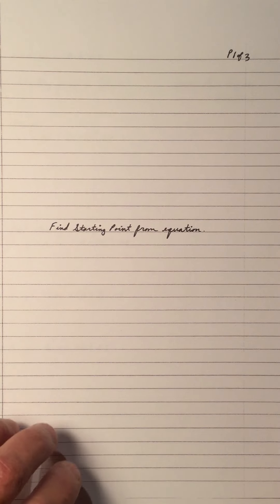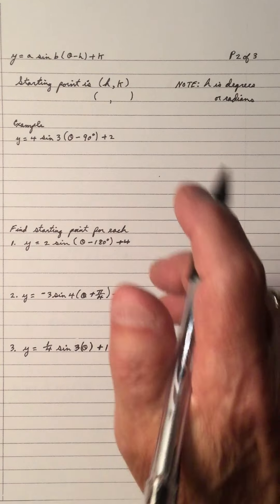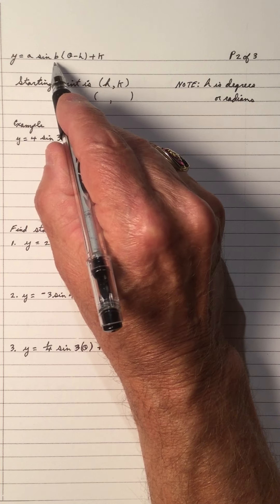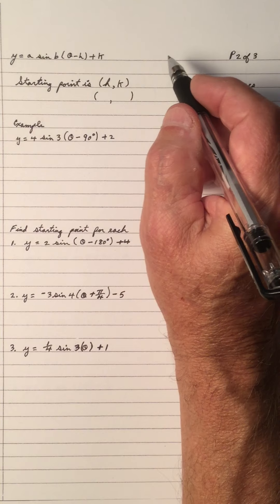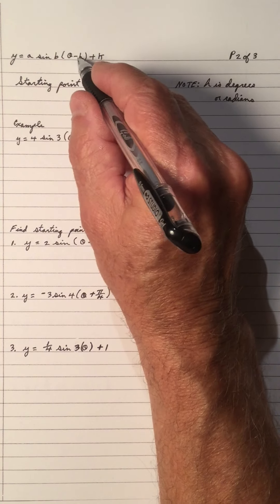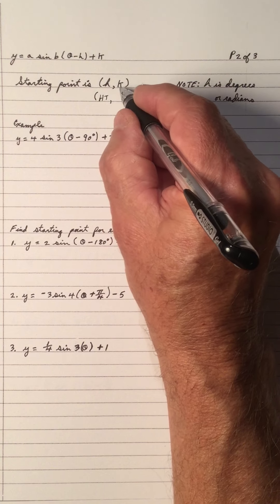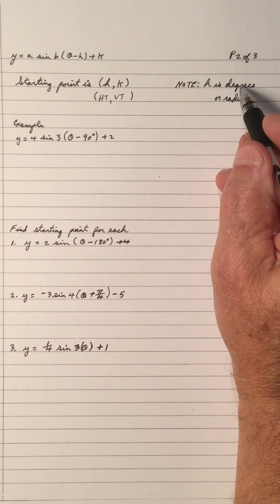Welcome to my video on finding the starting point from an equation — that's the starting point for each sinusoid function in sine and cosine. Let's look at it in terms of sine first. Y equals A times sine B bracket theta minus H plus K. The starting point in this equation for sine is the H and the K, where H is the horizontal translation and K is the vertical translation. Note that H could be in degrees or radians.